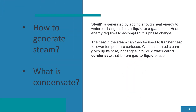Steam is generated by adding enough heat energy to water to change it from a liquid to a gas phase. The heat energy required to accomplish this phase change allows the heat in the steam to then be used to transfer heat to lower temperature surfaces. When saturated steam gives up its heat, it changes into liquid water called condensate — that is, from gas to liquid phase.